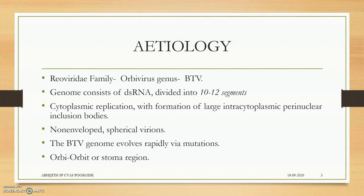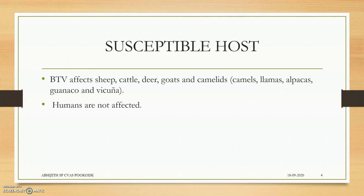This segmented genome is the actual reason behind genetic reassortment and the arrival of different strains. The virus undergoes cytoplasmic replication with formation of large intracytoplasmic perinuclear inclusion bodies in the host — this was also asked in previous exams.